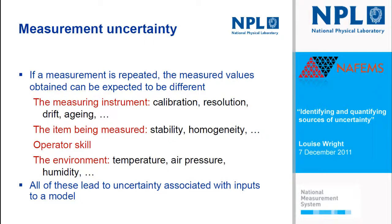Measurement uncertainty is something that the National Physical Laboratory is very concerned with. If a measurement is repeated, you can expect the measured values to be different due to various reasons. Your measuring instrument is going to have drift or calibration issues. The item being measured may not be stable itself and may be affected by its environment. A lot of these issues also affect model uncertainties — the environment in particular is something that you tend to simplify about.